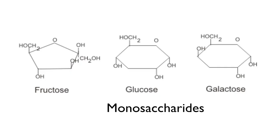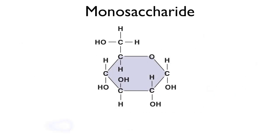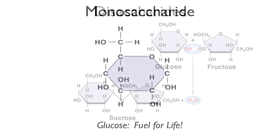Let's look at some carbohydrates. We're going to start with the monosaccharide — mono means one, and saccharide is Greek for sugar. These are single chains, either five or six carbons long. This is glucose. This monosaccharide is the fuel for life. This is really what your cells are burning so that your body can do all of the amazing things that it does. This is what our fuel molecule really looks like.